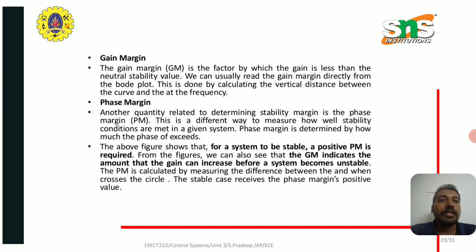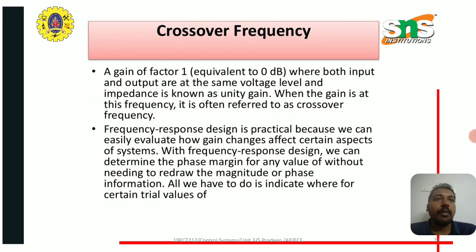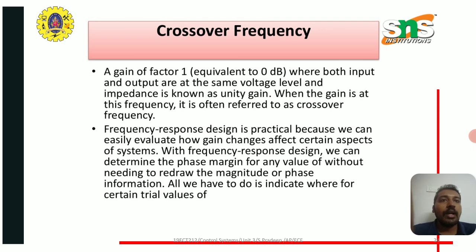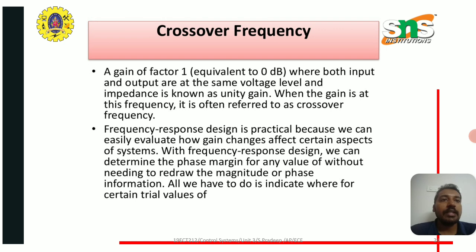The phase margin is calculated by measuring the difference at the gain crossover frequency. The stable case yields a positive phase margin value. Crossover frequency refers to a unity gain factor where both input and output are at the same voltage level; this is known as unity gain, and the frequency at which this occurs is called the crossover frequency. Frequency response design is practical because we can easily evaluate how gain changes affect certain aspects of the system.